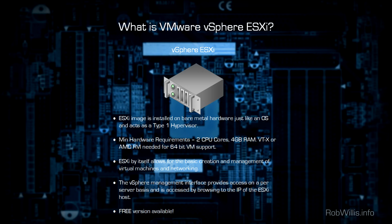For the minimum hardware requirements, you're going to want a CPU with at least two cores — obviously the more the better — a minimum of four gigabytes of RAM, and you want to make sure the CPU has support for Intel's VT-x or AMD RVI, which enables support for 64-bit operating systems, which is pretty much everything you'll see nowadays.